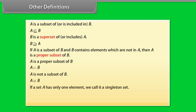If A is a proper subset of B, we use this symbol to designate that relationship. If A is not a subset of B, we write it this way. If a set A has only one element, we call it a singleton set. Look at these symbols now. The first one means implies that and the other one means if and only if.